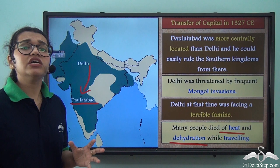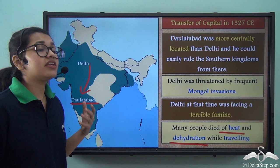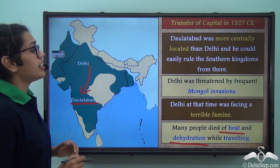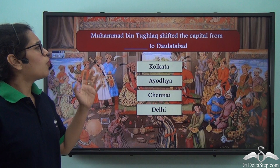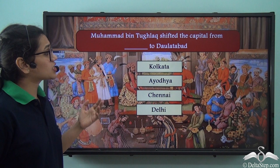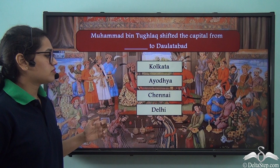These administrative failures led to him being given the title of the 'Mad King.' To test your understanding: Muhammad bin Tughlaq shifted the capital from which city to Daulatabad — was it Kolkata, Ayodhya, Chennai, or Delhi? The correct answer is Delhi. Muhammad bin Tughlaq shifted the capital from Delhi to Daulatabad.